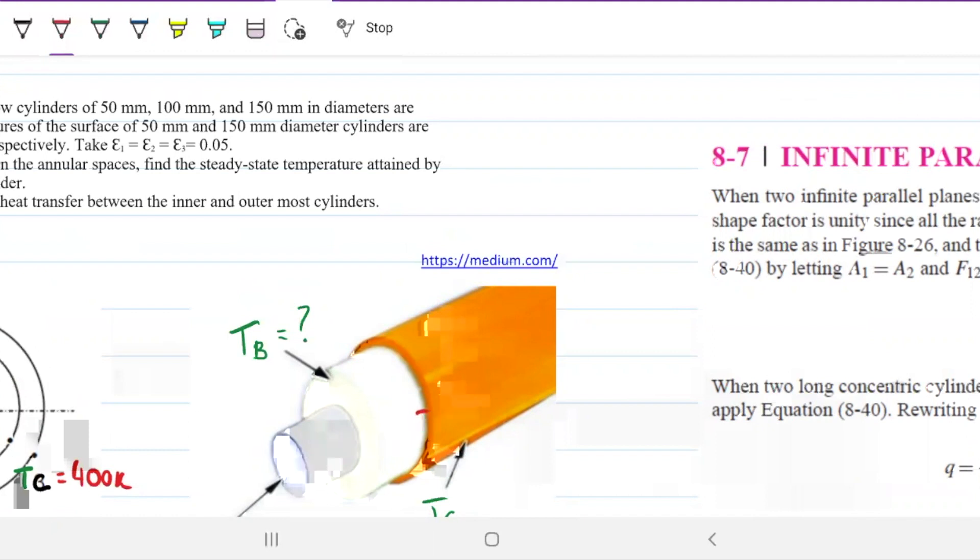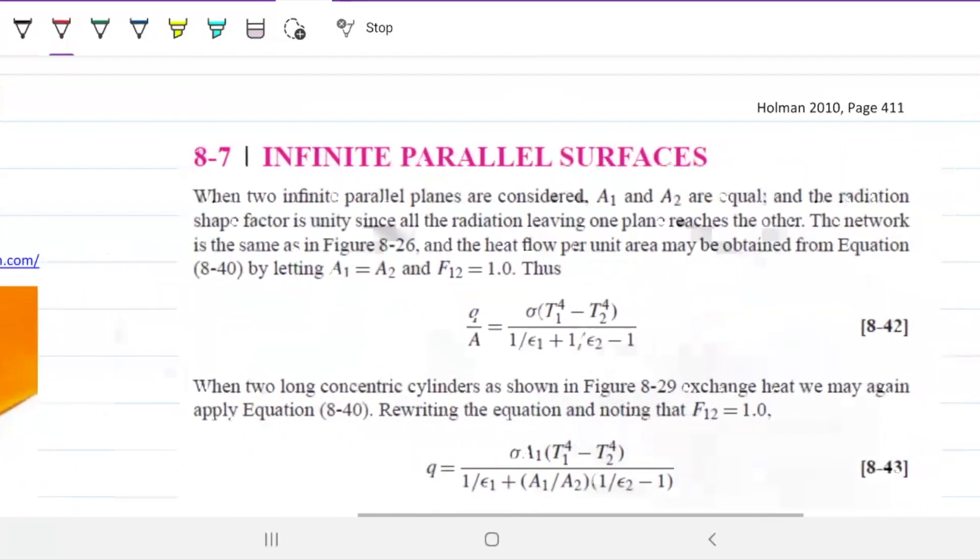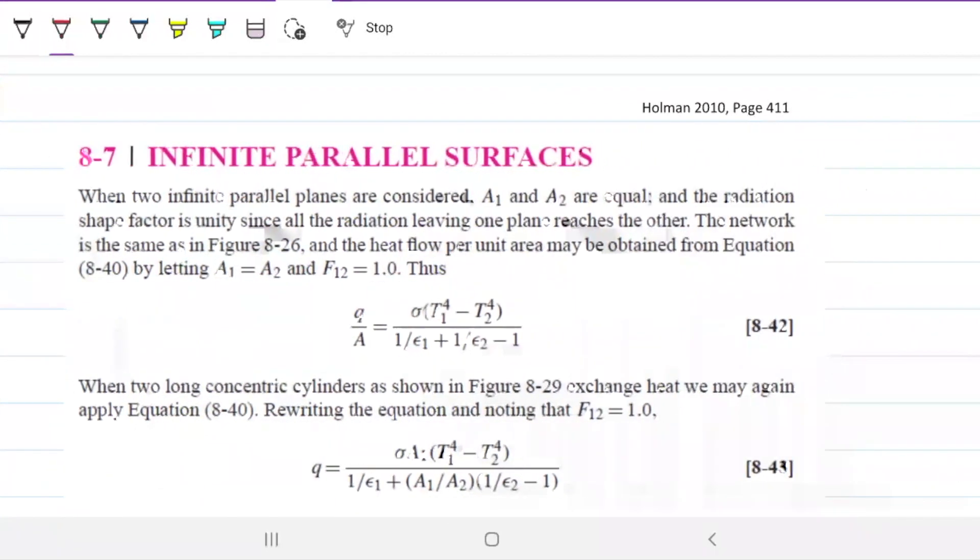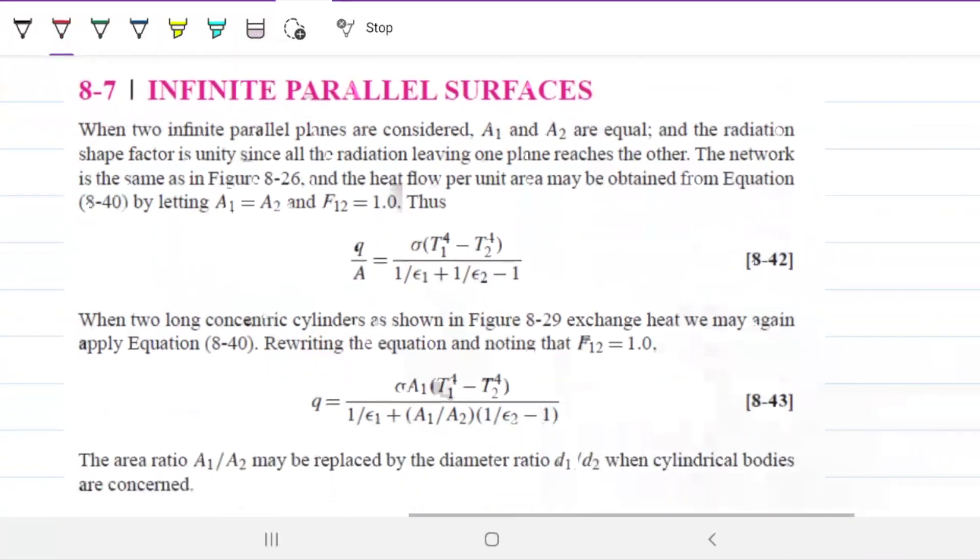The other thing is that we can use the infinity properties of these surfaces. When two infinite parallel planes are considered, area 1 and area 2 are equal. And the radiation shape factor is unity since all the radiation leaving one plane hits the other.